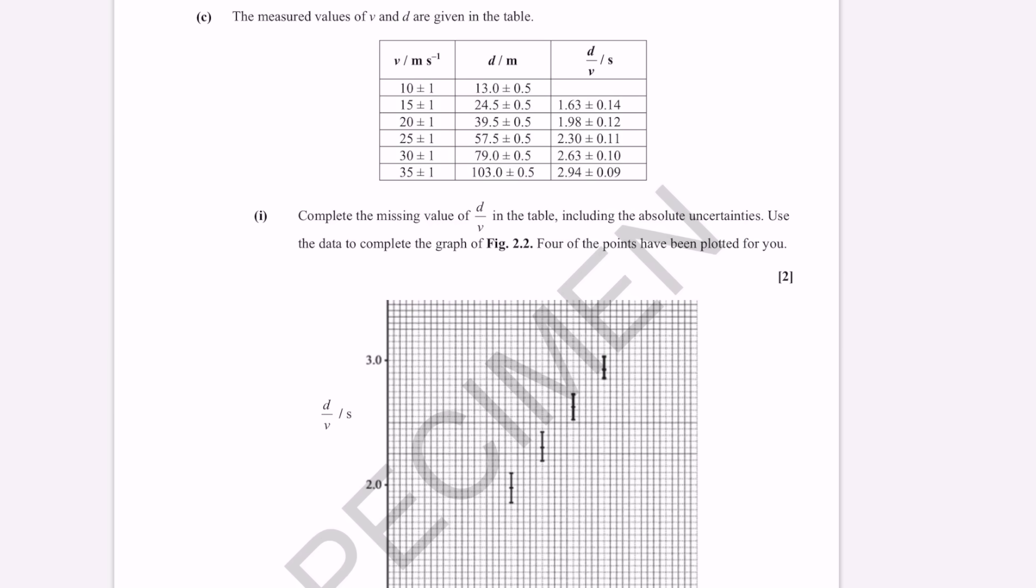Now the measured values of v and d are given in the table. We have v plus or minus a value, d plus or minus a value, and then what we need to find is d over v with its uncertainty. My first job in this case is simply to figure out what d over v is. This one here is quite easy. It's going to be 13 over 10. So I'm going to have to be quite careful and conserve decimal places. So 13 over 10 is just going to be 1.30.